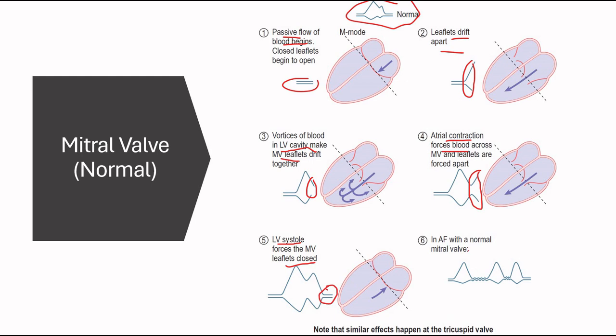And in atrial fibrillation, this is what normal M-mode through the mitral valve looks like. As you can see, there is no atrial contraction, so we lose the second peak here. As in AFib, there is no atrial contraction.